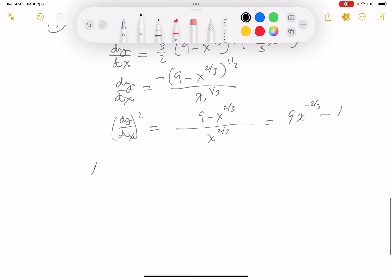What I have to do now is add 1 to that. It looks relatively simple. What do you get? You get 9x to the minus 2 thirds. So I think I'm ready to write the integration down. And the integration is going to be 2 pi.